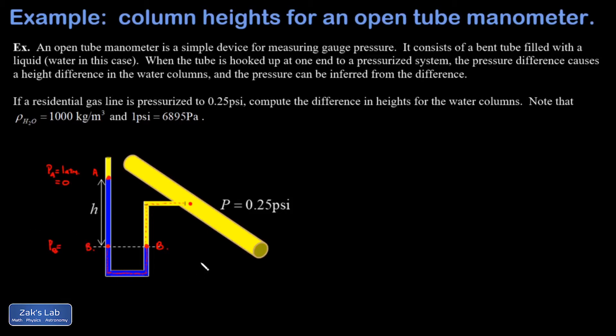Putting all that together, the pressure in the gas pipe is the same as the pressure at this point on the right, and that's the same as the pressure at this point on the left. So the pressure at point B is going to be 0.25 psi. Now I have a very simple problem with a vertical column of water. I'm calling the pressure at the top zero because I'm talking about gauge pressure, I know the pressure at the bottom, and therefore I should be able to find the height of this column.